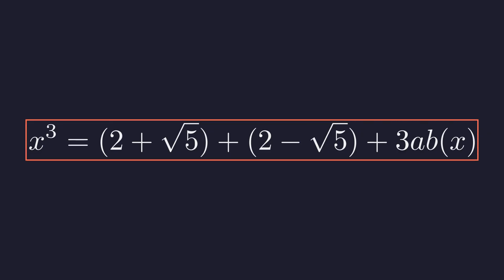And there it is, the plus root 5 and the minus root 5 completely annihilate each other. This is exactly why that symmetry we noticed earlier was so important.